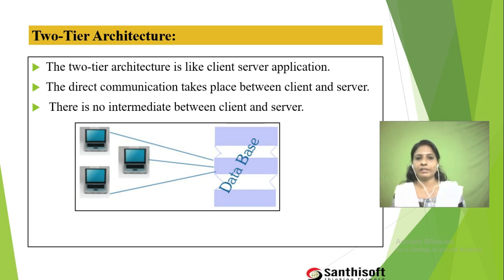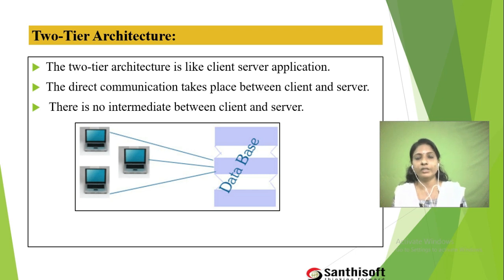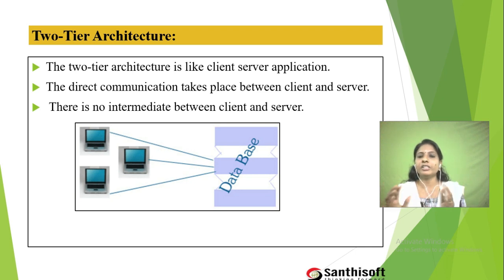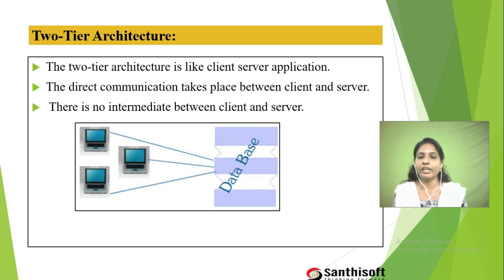Two-tier architecture acts like a client and server application. If a client gives a request to the server, the server will identify the request and give the response to that particular client — meaning they directly interact. The communication between the client and server is direct; there is no intermediate between them. This is the same concept as two-tier architecture in ASP.NET.